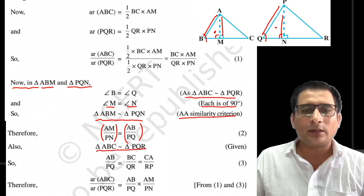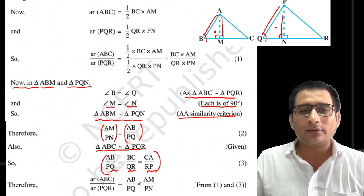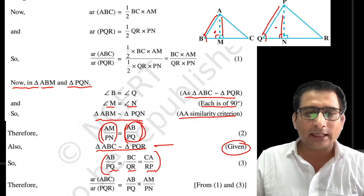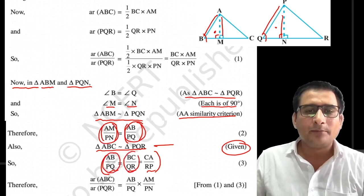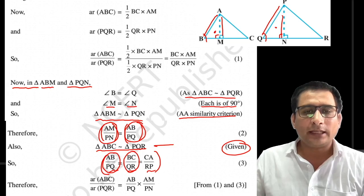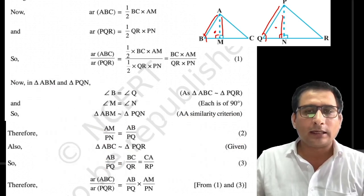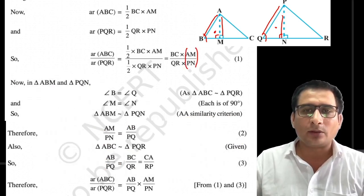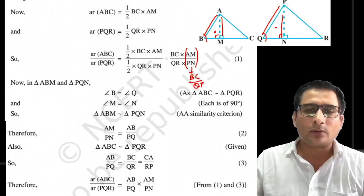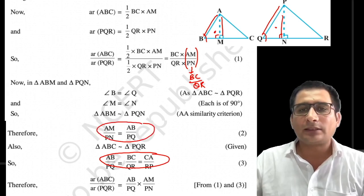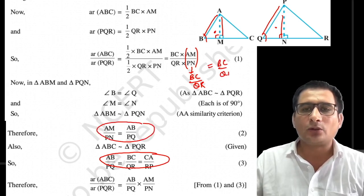Ab ek baat aur dekhiye. Aap ABC agar PQR ke similar hai, toh inki sides ka ratio same hoga: AB upon PQ = BC upon QR = CA upon RP. Yeh toh given hai humein. Yahan se, AB upon PQ kiske equal ho gaya? AM upon PN ke. AB upon PQ kiske equal hai? BC upon QR ke. Toh AM upon PN kiske equal ho jayega? BC upon QR ke equal ho gaya — jo main keh raha tha, jo humein prove karna tha.